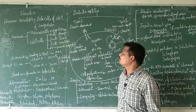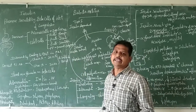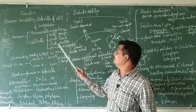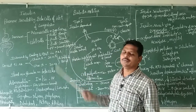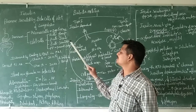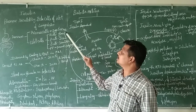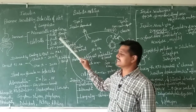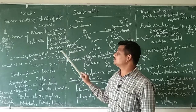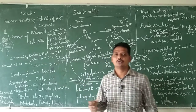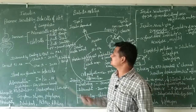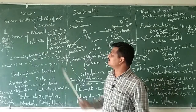Glucagon increases blood glucose levels, whereas beta cells produce insulin which reduces blood glucose levels. Somatostatin controls the secretion of alpha and beta cells, and pancreatic polypeptides control various gastrointestinal secretions. These are the various cells and their secretions.